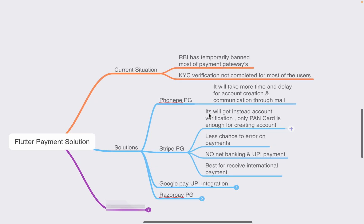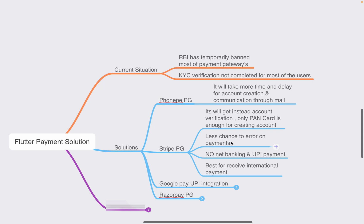The next payment solution is Stripe, which is an international payment gateway now available in India. With Stripe, you get instant account verification — only a PAN card is enough for creating an account as a proprietorship or individual. Verification is completed within one or two hours with no major delays. If you have no time to wait, Stripe is the better solution, with fewer payment errors compared to other gateways.